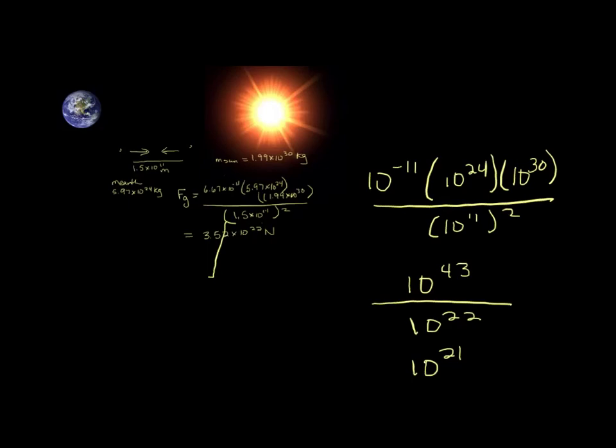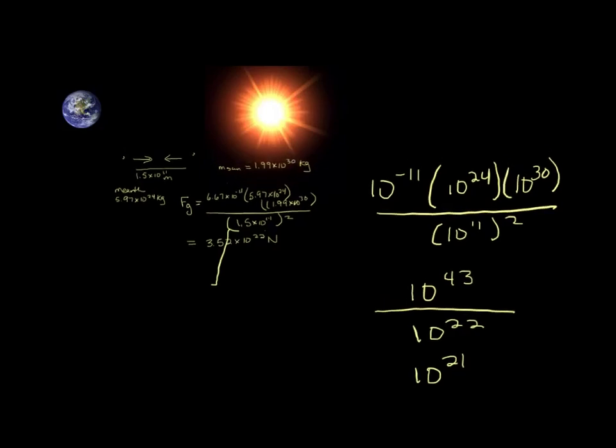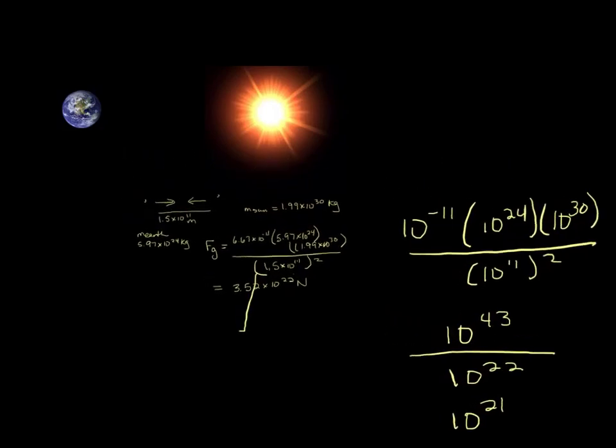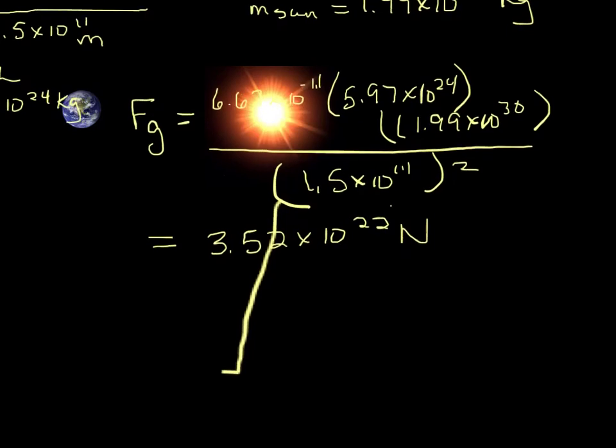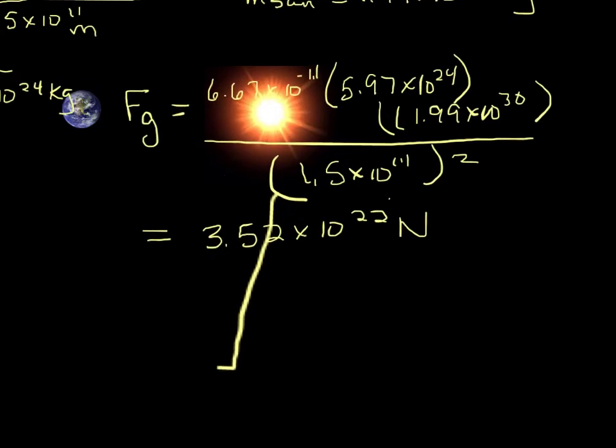We can see that gravitational force can be very small, like micronewtons between a boy and a girl, or very large, like 10 to the 22nd Newtons for the Earth and the Sun.